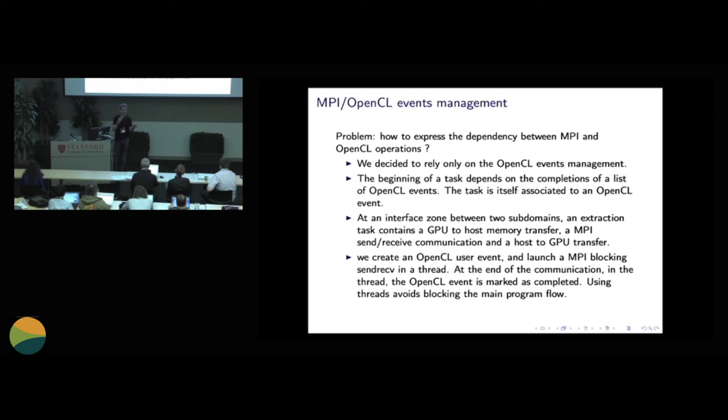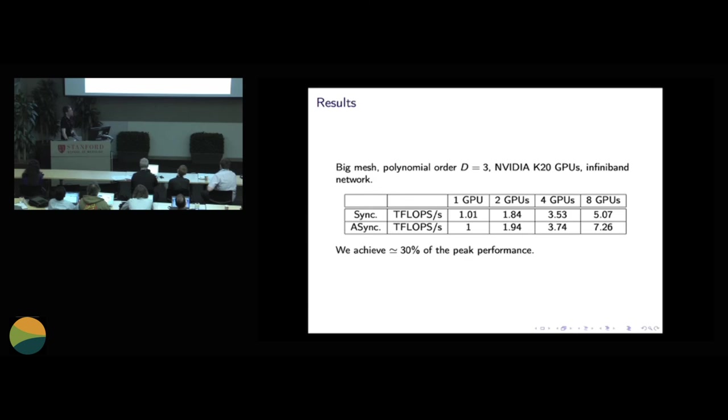So you also have an MPI communication. And the problem is how to make MPI and OpenCL discuss together. And what we have found, we have found this simple solution, which is when we want to have an MPI communication, we launch a thread. And in the thread, we launch the MPI communication. So in this way, it is possible to continue the main program flow and launching other kernels. And when the MPI communications are finished in the thread, then we modify an OpenCL event in order to trigger all other computations.